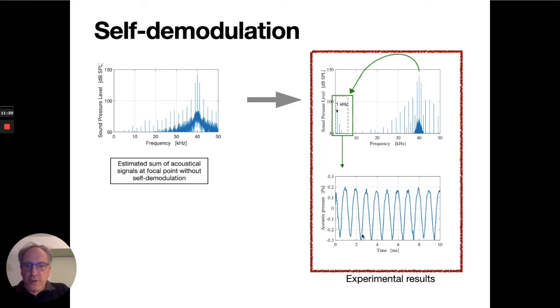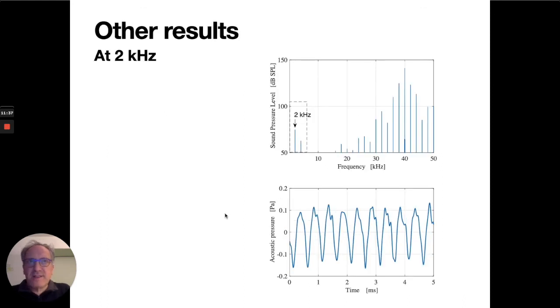This figure shows the audible signal versus time delivered by the digital loudspeaker to the focal point. This temporal signal was obtained by applying a low-pass filter to the microphone signal.